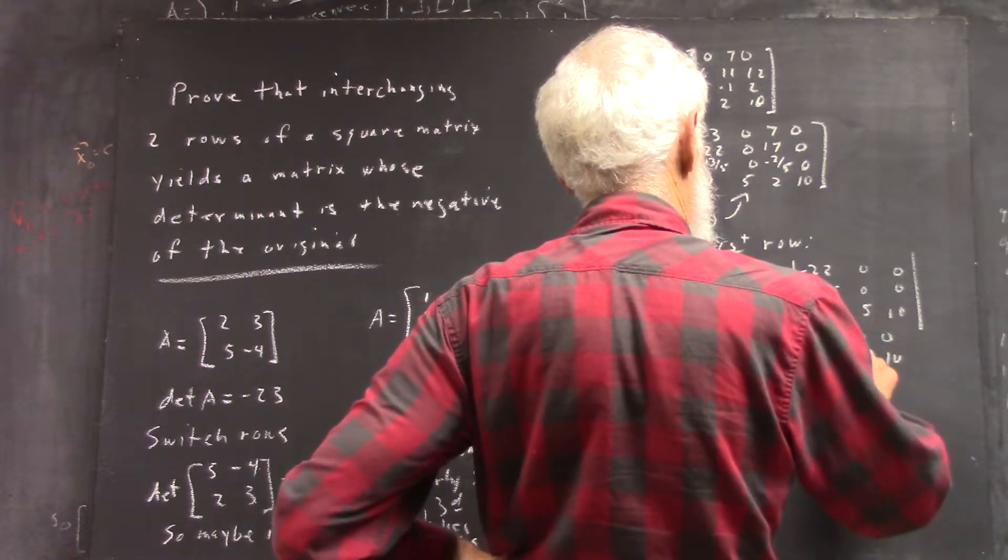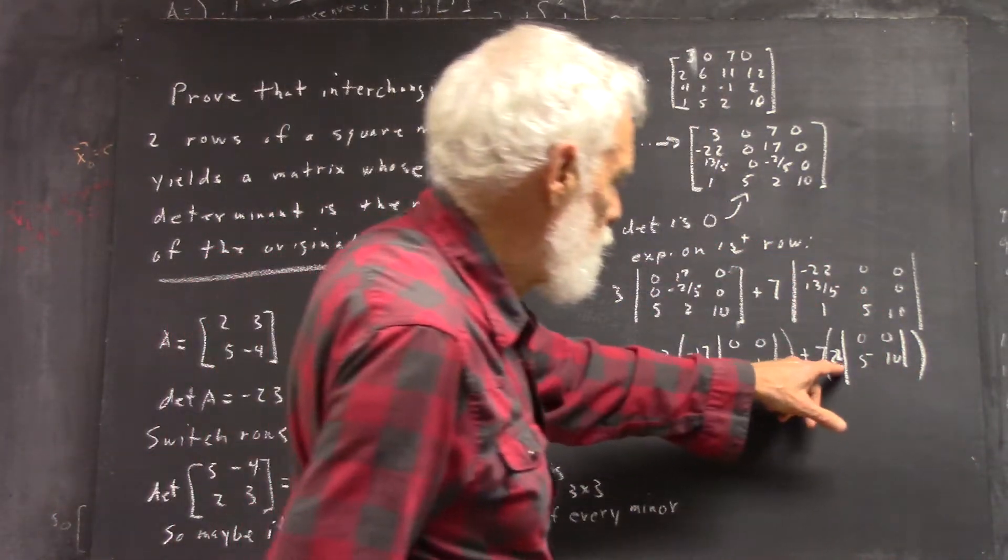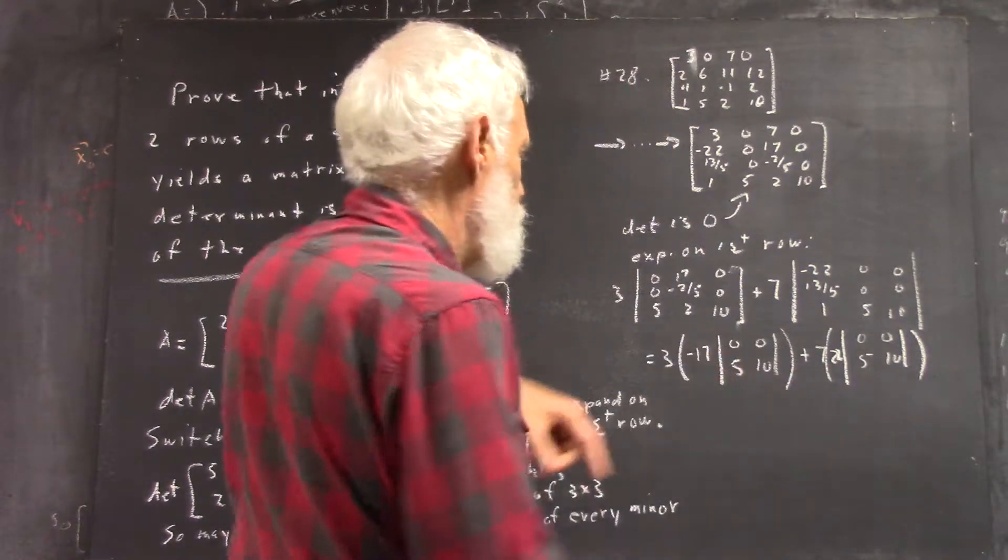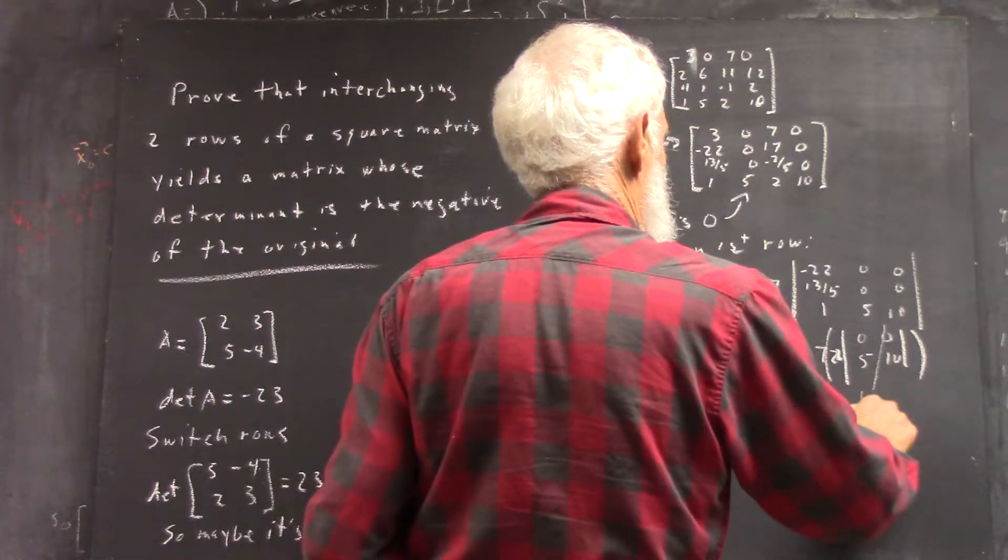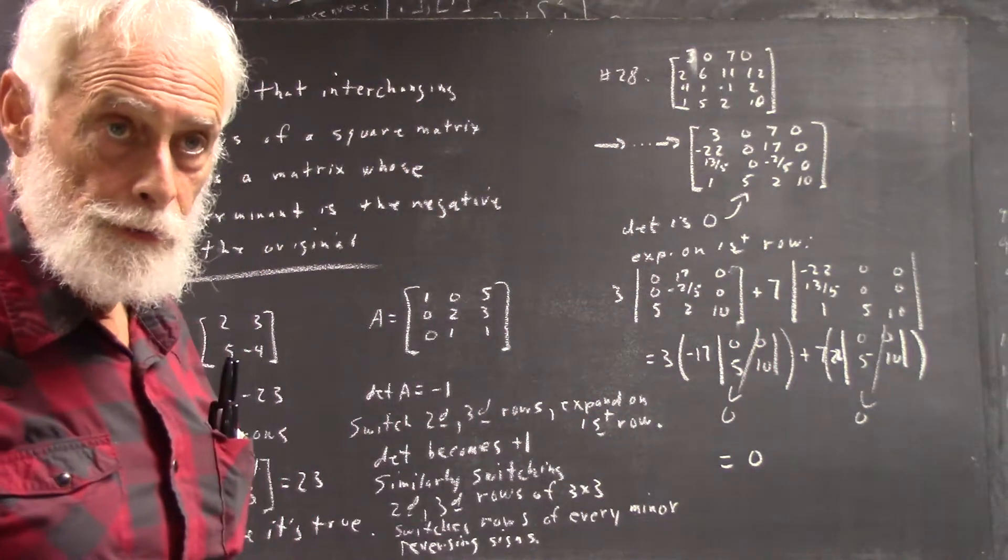And I should have a 22 in there. That's seven and a 22. But you see that these are both zero, and multiplying by zero gives us zero, right?